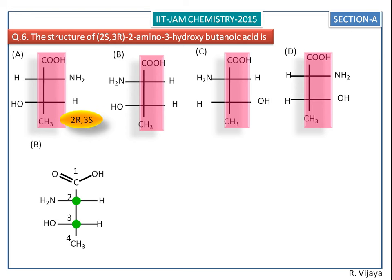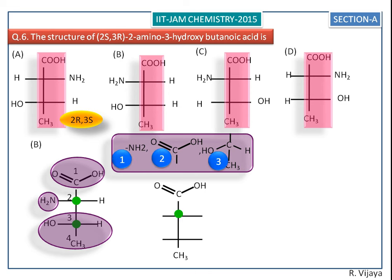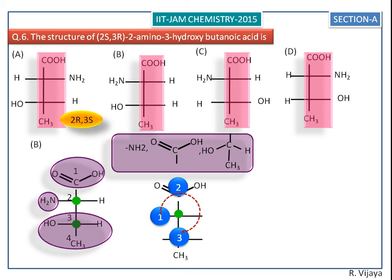For the B structure, we first assign the configuration for the second chiral center. The higher priorities rotate in a clockwise direction, so it is supposed to be 2R, but it is not, because the least priority hydrogen is towards the observer, so we change R into S.